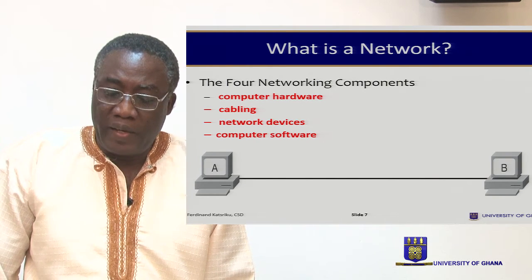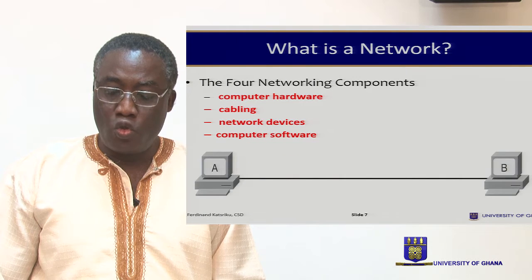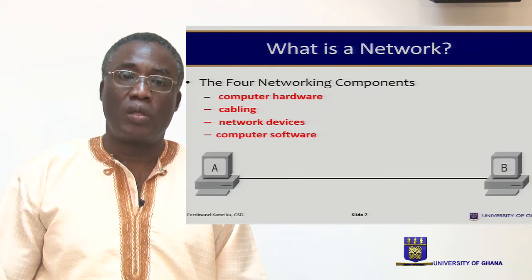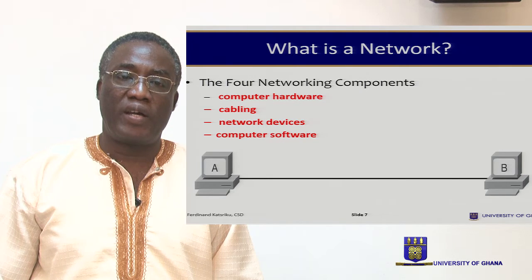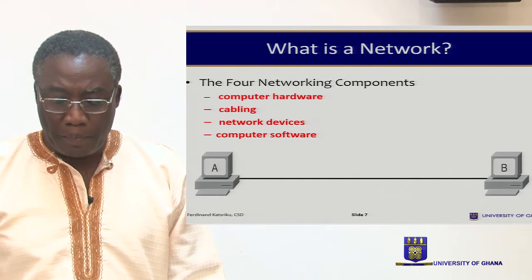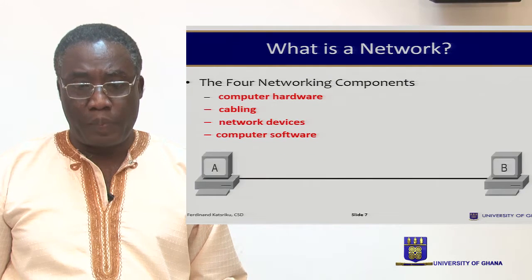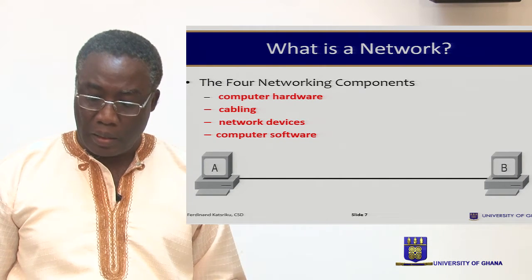We may define a network formally as a combination of computer hardware, cabling, network devices, and computer software used together to allow computers to communicate with each other. So there are four elements to that: computer hardware, cabling, network devices, and computer software. The diagram is an example of a simple network with two computers and a cable. Although it is not terribly impressive as a network, it does serve a good purpose in real life, as well as being useful for discussing networking and learning some basics in classrooms and labs.